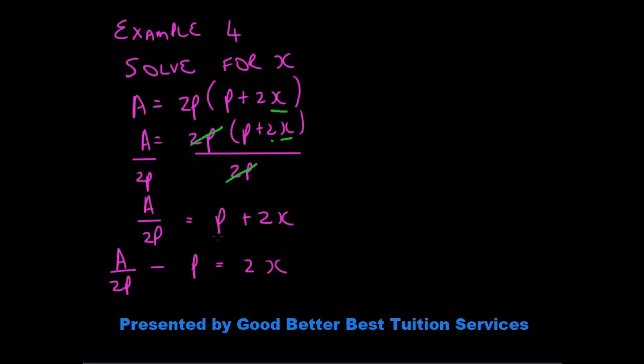What do we do now to get rid of the p on this side? It's a positive. We need to take it over the equal to sign. It changes sign and it becomes a minus p is equal to 2x.